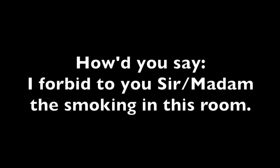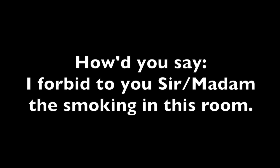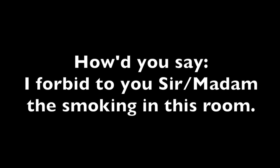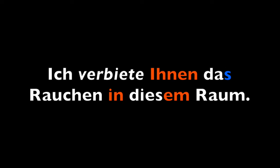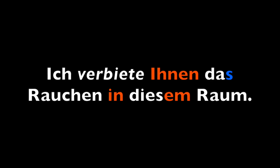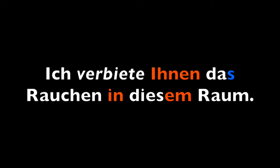How would you say 'I forbid to you, sir or madam, the smoking in this room'? Ich verbiete Ihnen das Rauchen in diesem Raum. 'In this room' is 'in diesem Raum'. The preposition 'in' triggers the dative because it's about position — where we are. 'In' is a two-way preposition and triggers the dative. 'Der Raum' is masculine, but the dative masculine article is 'dem', so we carry on the -em ending and say 'diesem'. In diesem Raum — in this room.